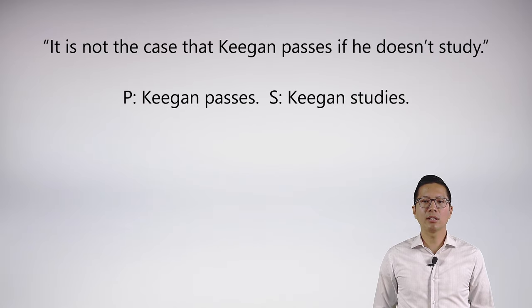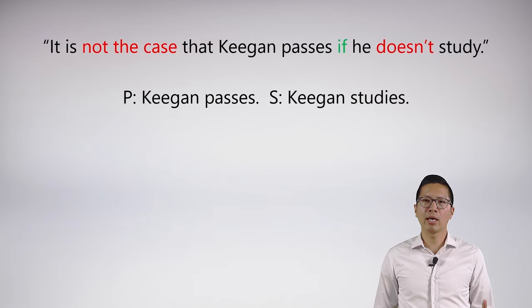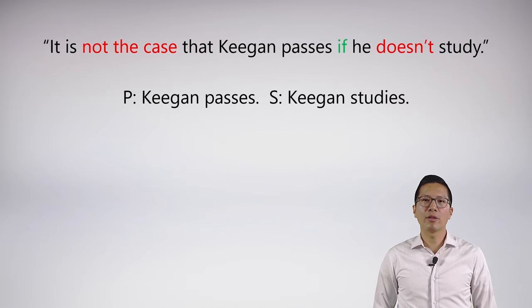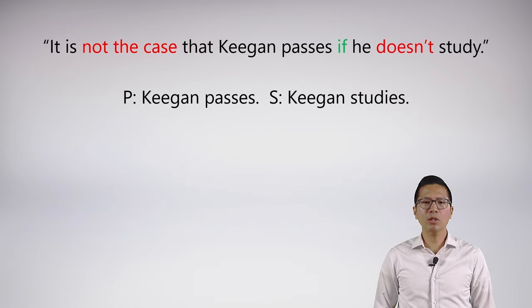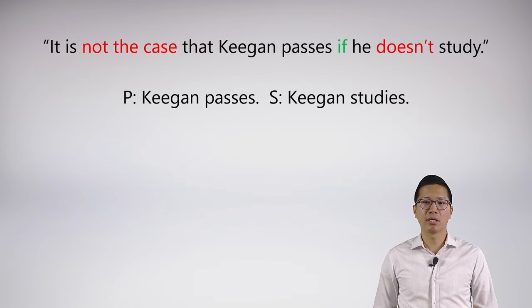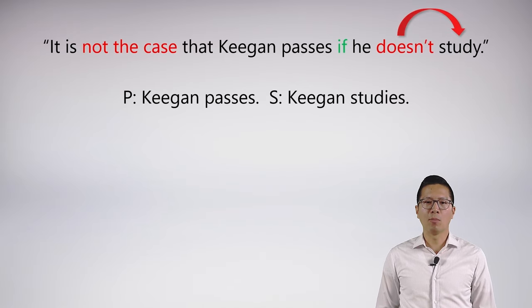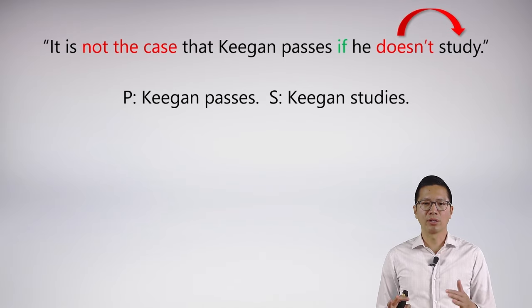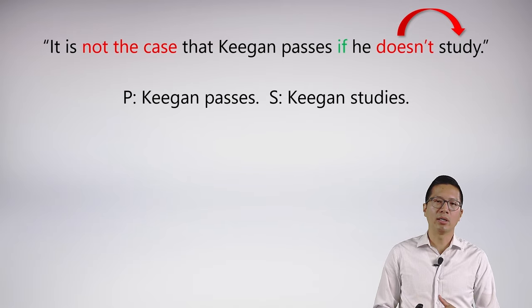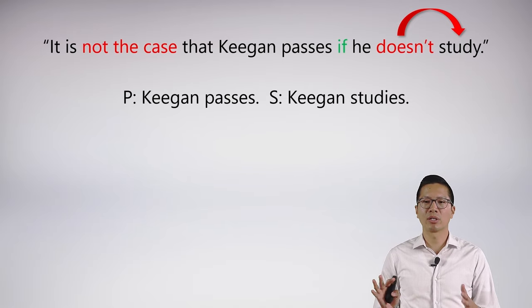So let's take a closer look at the sentence. There are three connectives here. Two of them are negations, which we remember are unary connectives — they just modify one thing. And the other connective is the conditional, if-then. So if we look at the end of the sentence where it says 'he doesn't study,' that's not really complicated. The 'doesn't' is clearly just modifying 'study,' which is the atomic letter S. So we know there's some sort of negation S.